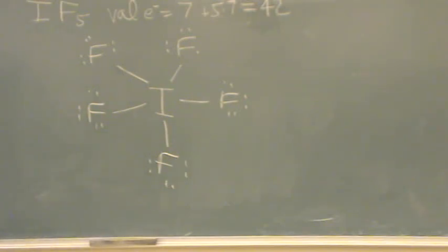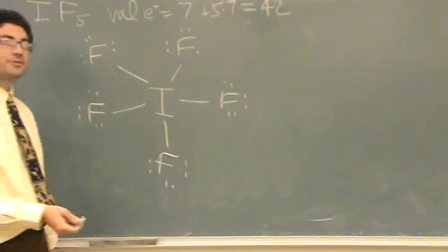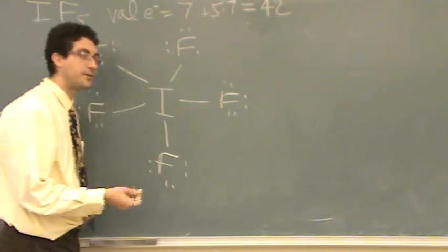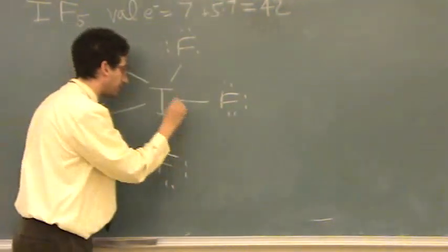Where do I put that last pair of electrons? I've counted forty of forty-two so far. Yeah, if you're ever over and you've run out of places to put it, you put it in the middle.